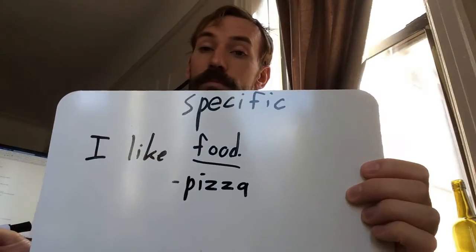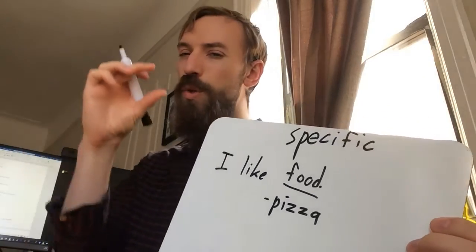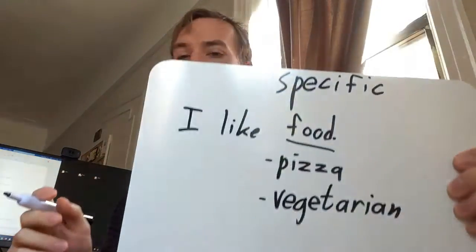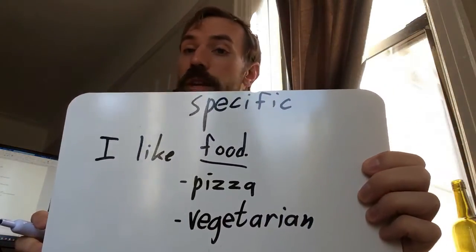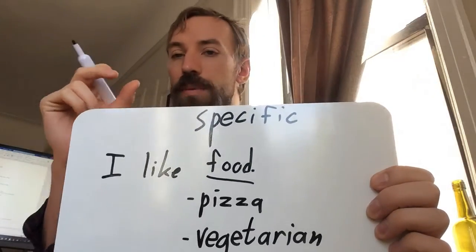So, for example, I could say what kind of food do I like? And I'll write pizza. I like pizza — that's a more specific word. You can even get more specific than that. What kind of pizza do you like? I like vegetarian pizza. That means that you have lots of vegetables on it and no meat. So, I like vegetarian pizza — that's a more specific kind of pizza.